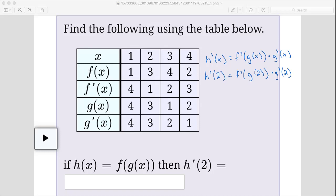Let's use our chart starting from the inside out. So we need g of 2, that's the inside function here, so let's go to g and then for x of 2 gives us a 3. So g of 2 is 3.